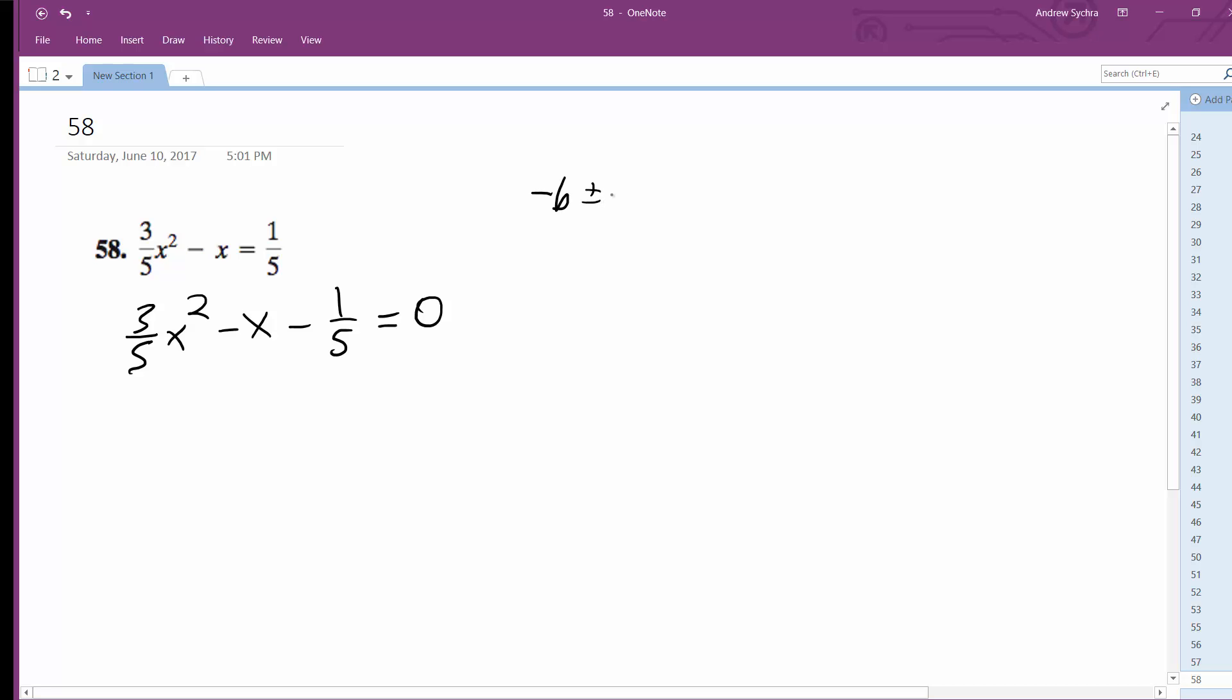Quadratic formula is negative b plus or minus square root of b squared minus 4ac all over 2a.